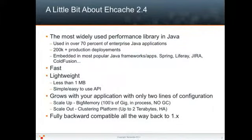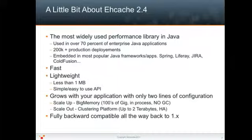eHcache is the most widely used performance library in Java. It is used in over 70% of enterprise Java applications and is embedded in the most popular Java products and frameworks, both open source and closed. eHcache is fast, lightweight, simple to use, and grows with your application. eHcache 2.4 is fully backward compatible to versions 1.x, so there is no reason not to upgrade.